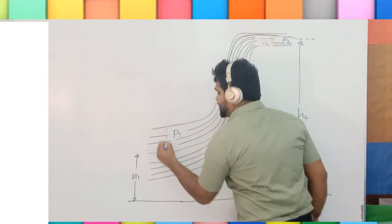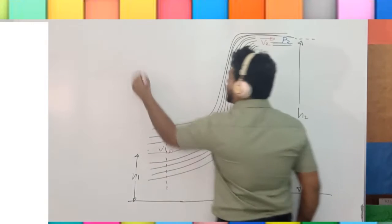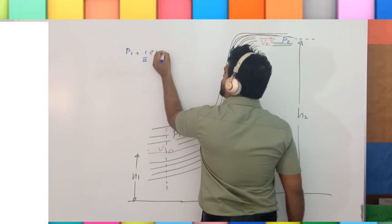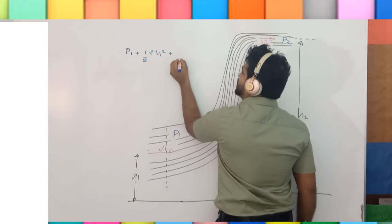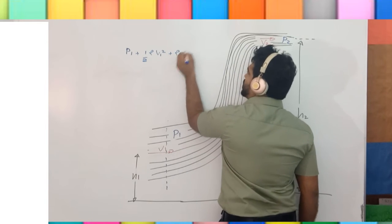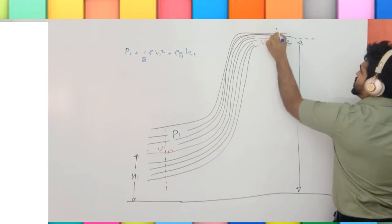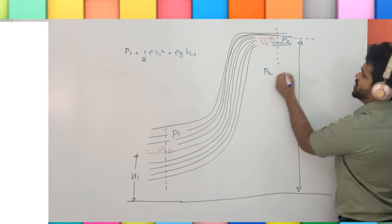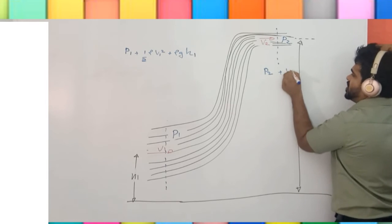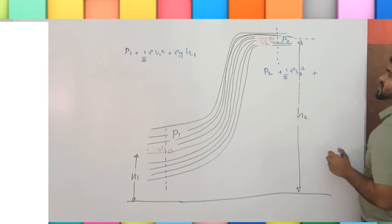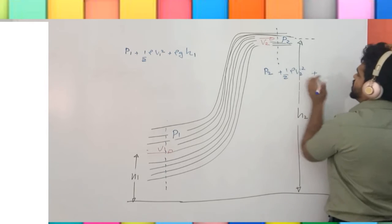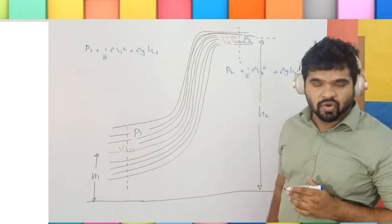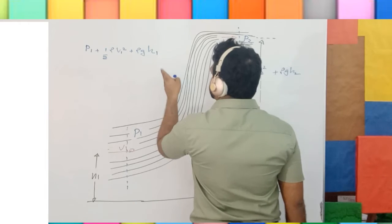Through this cross section: pressure, kinetic energy per unit volume, and potential energy per unit volume. Through this cross section: pressure p2, kinetic energy per unit volume half rho v2 square, plus potential energy per unit volume rho g h2. According to Bernoulli's law, the sum of these three physical quantities is a constant.